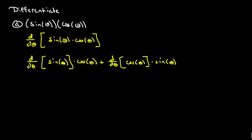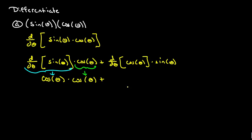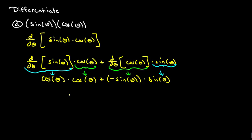The derivative of sine, which we've just gone through, is cosine. So we're going to multiply that by cosine. Then the derivative of cosine is going to be negative sine, and we'll multiply that by sine. So this ends up being cosine squared theta minus sine squared theta.